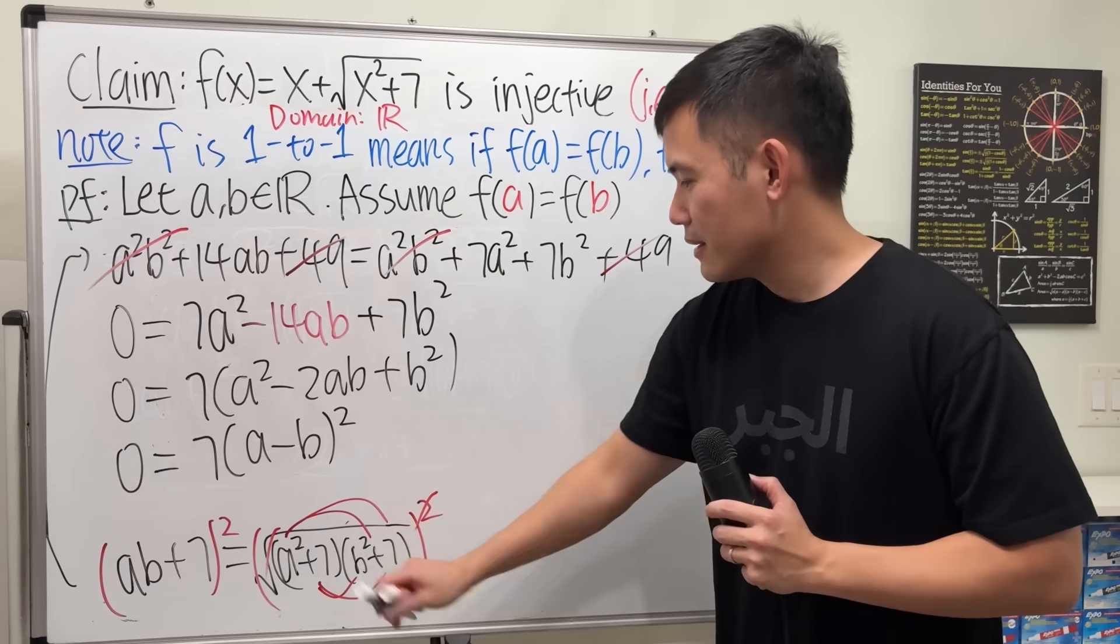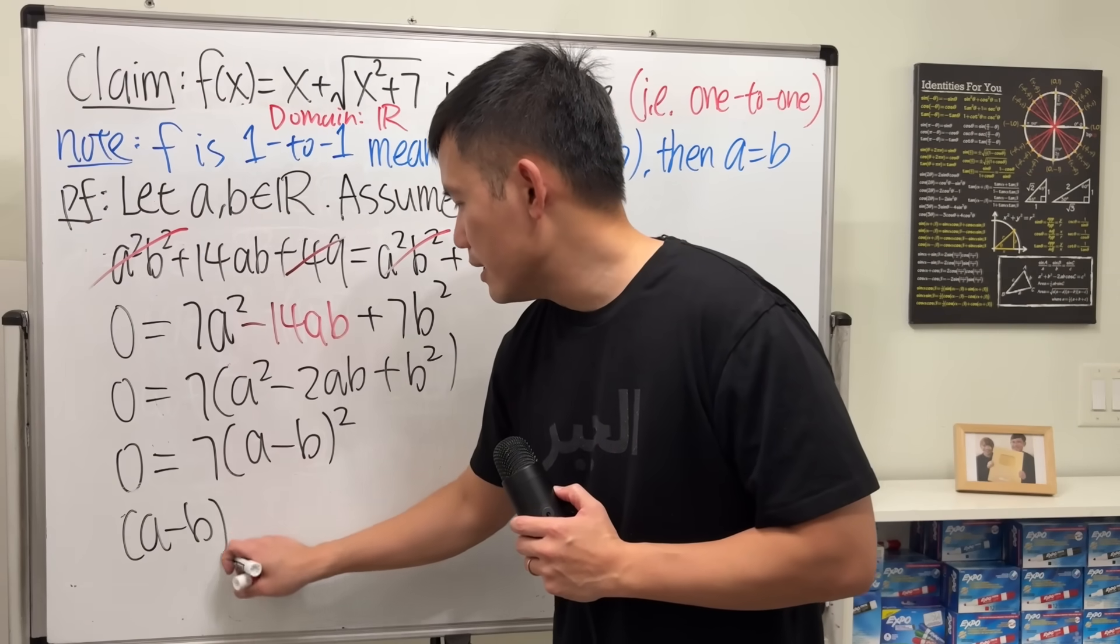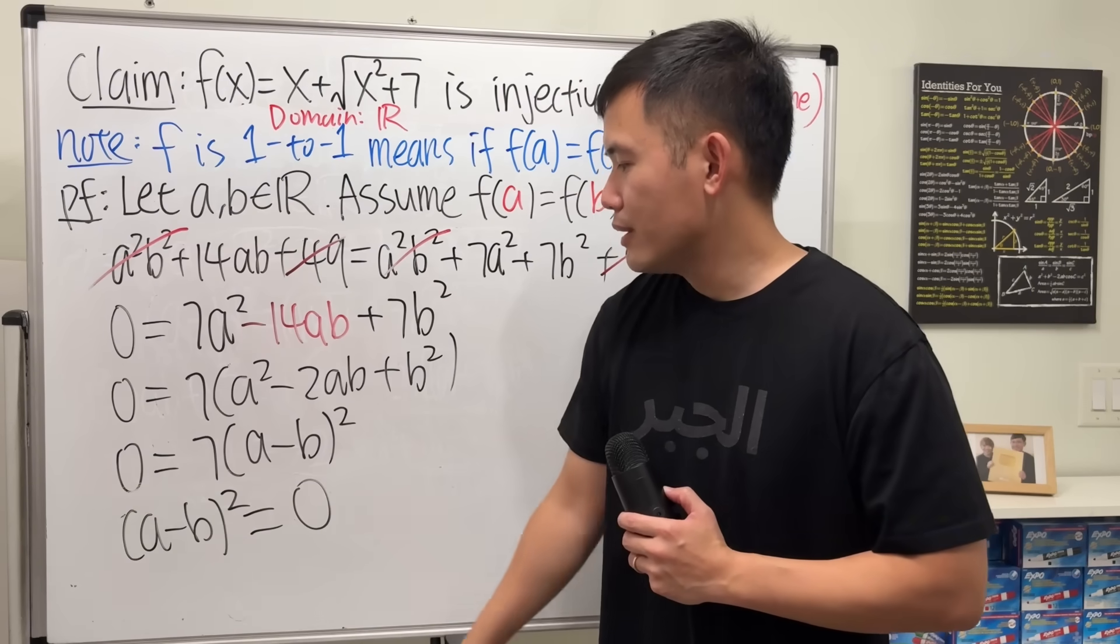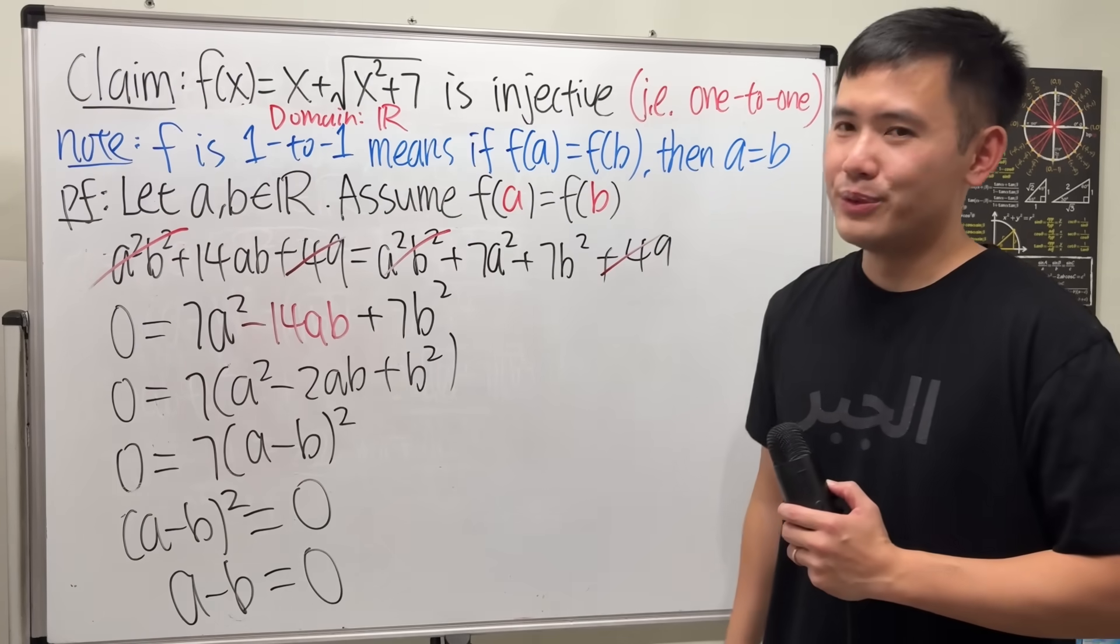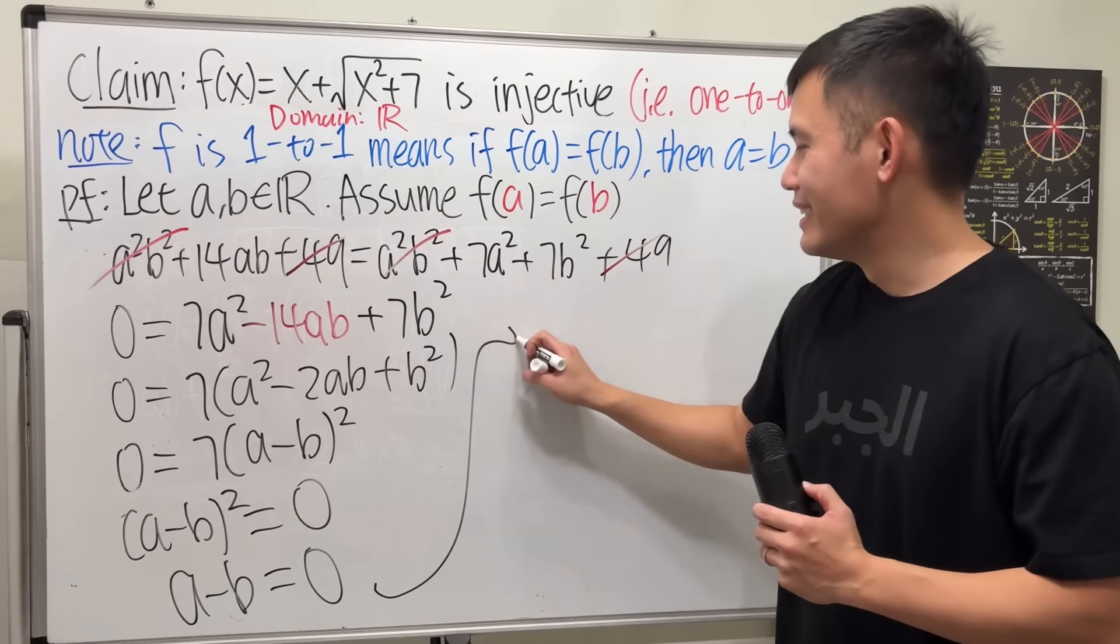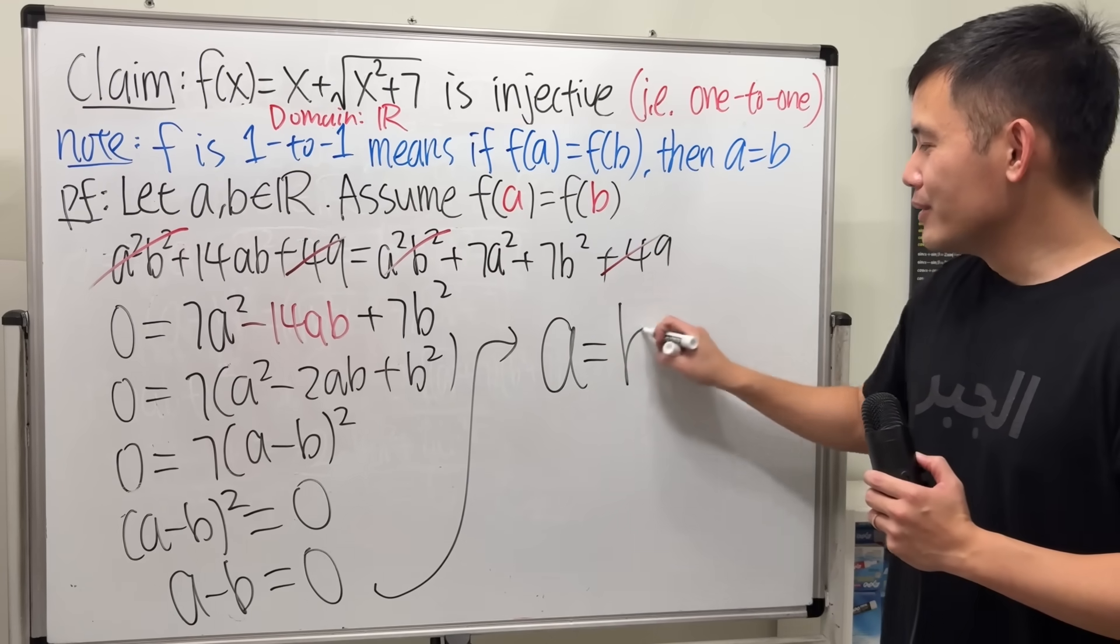And then, divide 7 to both sides. So, we get a minus b squared is equal to 0. And of course, this means that a minus b is equal to 0. And of course, ladies and gentlemen, after we add b to both sides, we get a is equal to b.